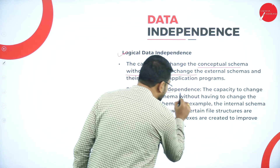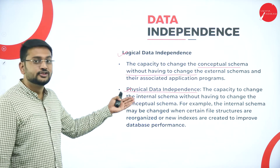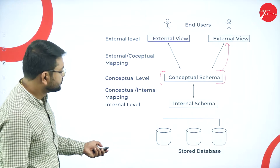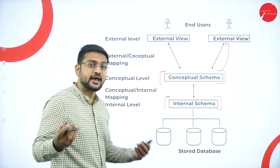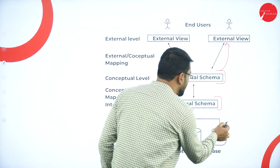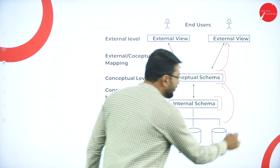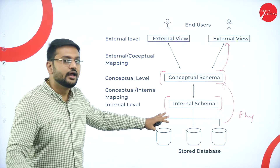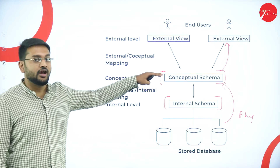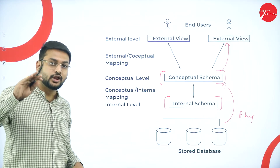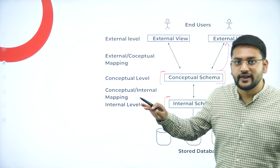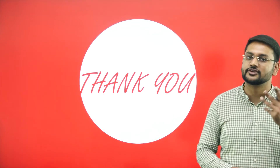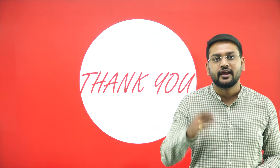Physical data independence is the capacity to change the internal schema — also called the physical level — without changing the conceptual schema. This is why we call it physical data independence, because the internal schema is the physical level and the conceptual schema is the logical level. So by now I've come to the end of this topic. Happy learning — watch my next session. Thank you everybody, keep watching and sharing.